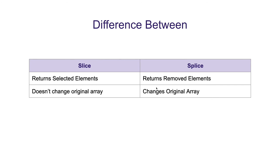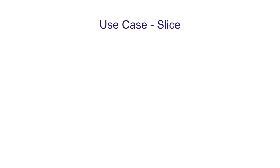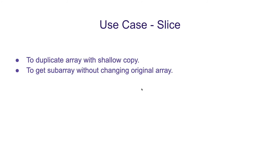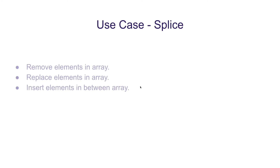Now let's talk about the difference between slice and splice. Slice returns the selected elements, whereas splice returns the removed elements. The most important difference is that slice does not change the original array, whereas splice does. Where should we use slice? Use slice to duplicate an array with a shallow copy, or to get a subarray without changing the original. Where should we use splice? Use splice to remove, replace, or insert elements in between an array.